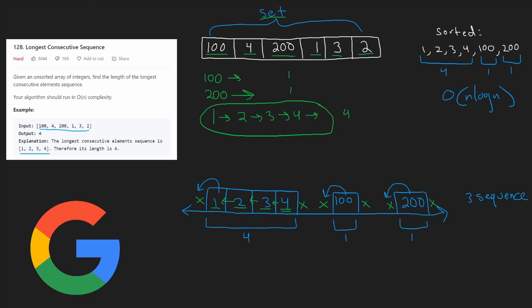We took a really complicated-seeming problem and broke it down so easily. All we had to do was iterate through the initial array, use a set, and check if values had left neighbors — if they didn't, they were the start of sequences. Since we only iterate through the entire array and expand each range, we visit each number at most twice, so the time complexity is O(n). We also use additional memory to create the set, so the memory complexity is also O(n), where n is the size of the input array.